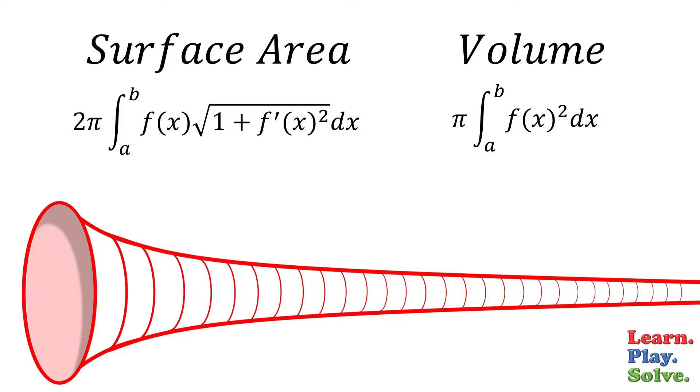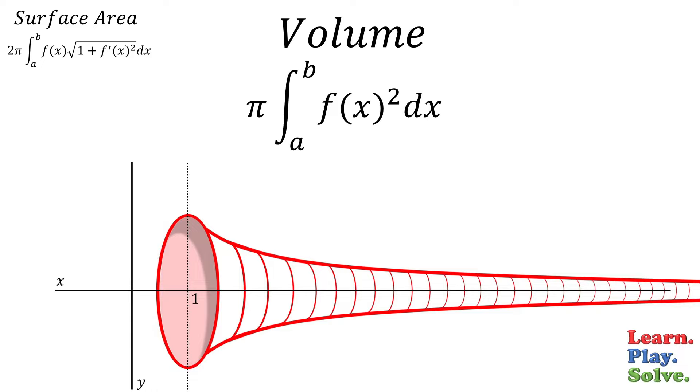The volume looks much easier, so let's start with it. Remember, we started with the reciprocal function, which is 1 over x. So that'll be our f of x. And our limits are from 1 to infinity.